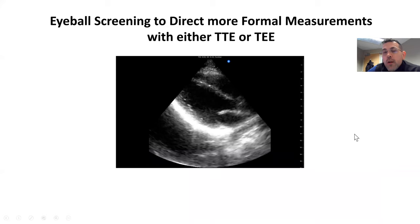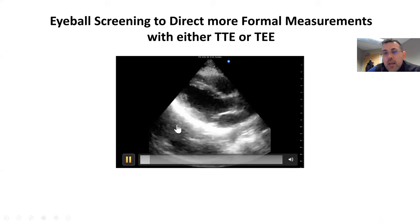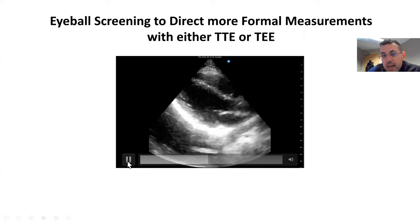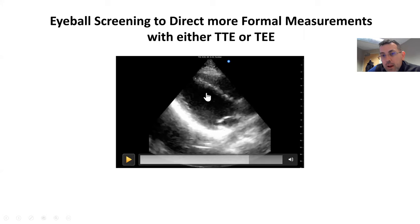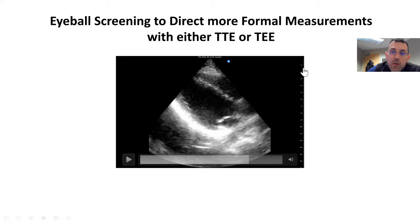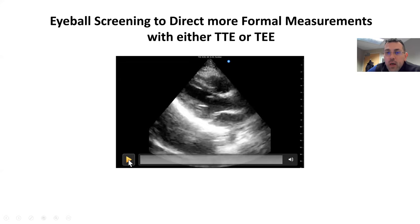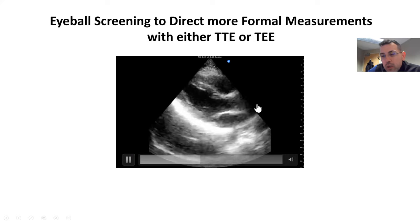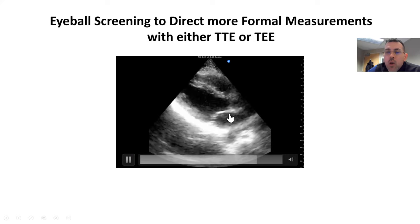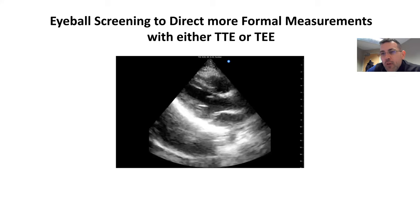Alternatively, we can catch this in end diastole and draw calipers across to get that same measurement. I also wanted to highlight that we have calibration markers on the side of the screen, and we can eyeball these things. Using the calibrations on the side, you can get a rough estimation just by looking — without putting the calipers on — to get a rough idea of whether you need to take time for more formal measurements if things start to look abnormal.